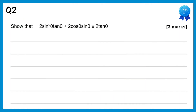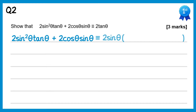For this question we'll write down the left hand side, and then the first thing we're going to do is factorise out 2sinθ. So we want to multiply 2sinθ by something to get 2sin²θ·tanθ. We've already got one sinθ so we need another one, and then we need the tanθ.